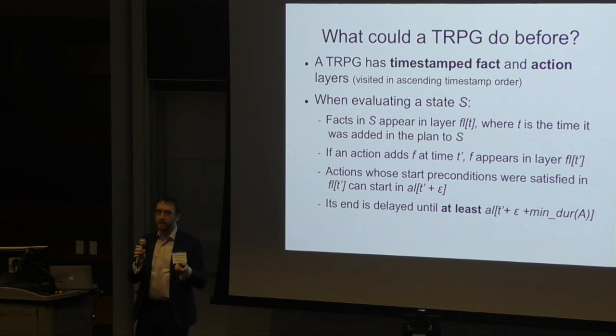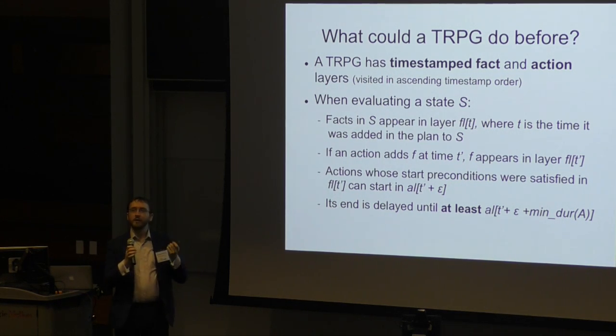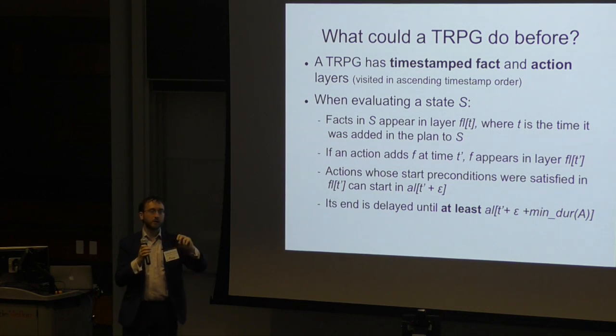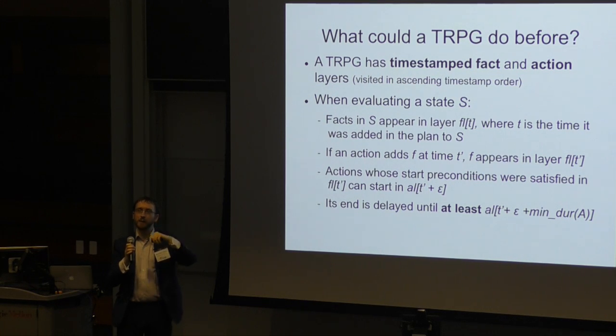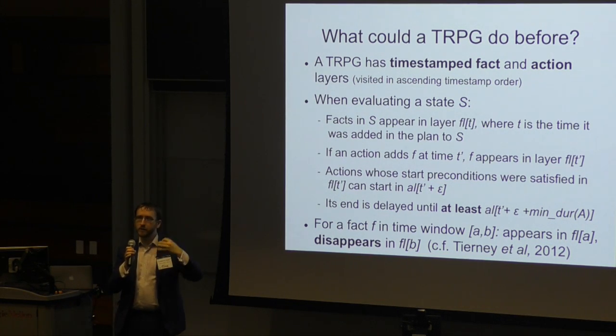A popular heuristic for temporal planning problems is a temporal relaxed planning graph heuristic. It's a lot like a classical relaxed planning graph heuristic, but instead of the layers being essentially integer labeled 0, 1, 2, 3, 4, they are now labeled with timestamps. We put the timestamps boosted by the durations of an action. So if we start an action at some layer T, then the end of the action is delayed until T plus the duration of the action. There's one extra thing we do: instead of all the facts appearing in the first fact layer, they appear in a layer whose time is equal to the time at which they were achieved in the plan that reached the state we're evaluating. So it's a temporally extended structure.